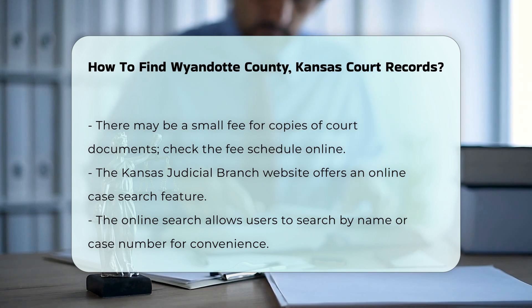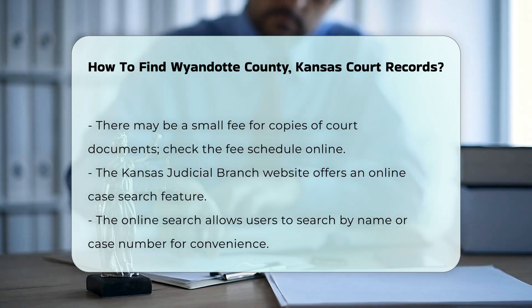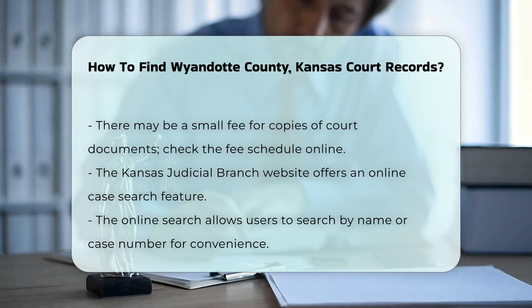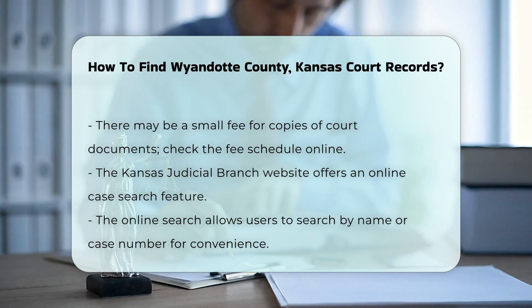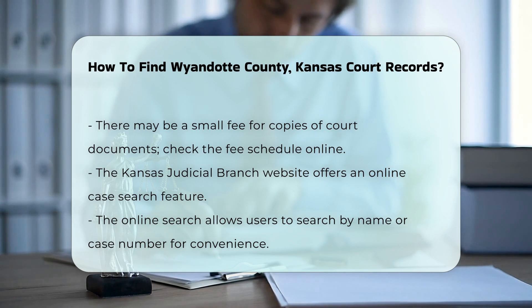For online access, you can use the Kansas Judicial Branch website. This site offers an online case search feature. You can search by name or case number, making it easier to find the information you need.